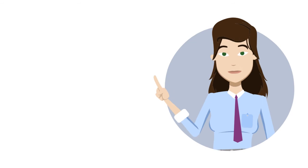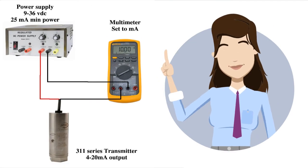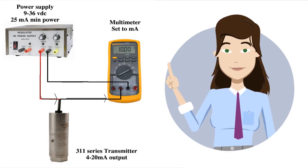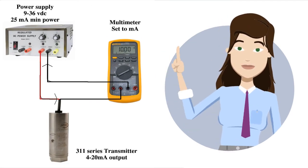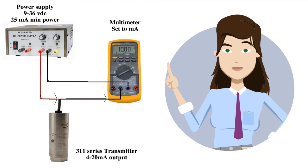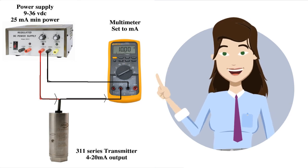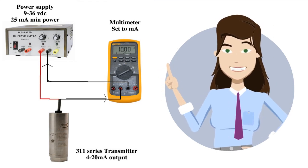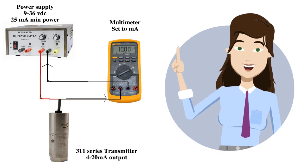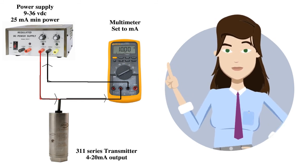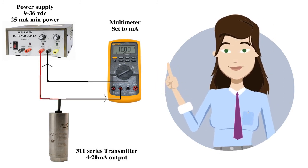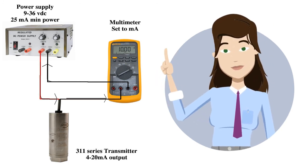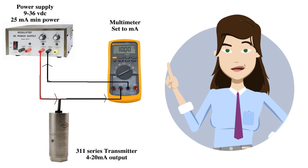You have now completed the milliamp loop hookup. The milliamp signal runs from the power supply through the pressure transmitter, back to the multimeter, then loops back through the return side of the power supply. The transmitter acts as a current limiter — the more pressure applied, the more current it allows to flow through the loop.